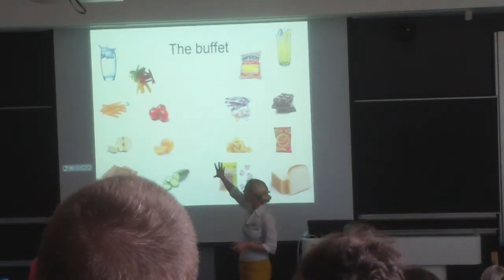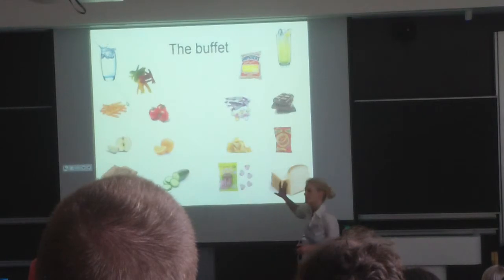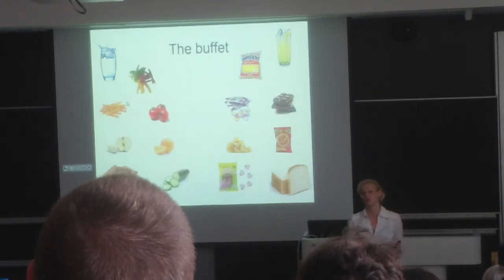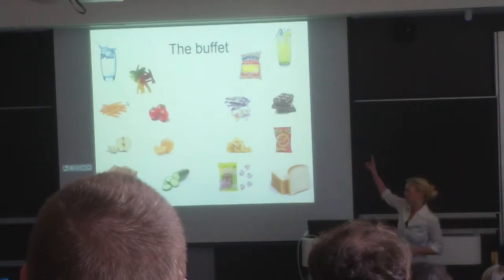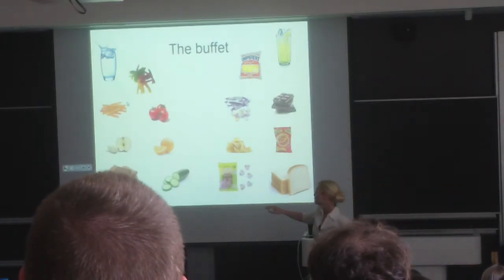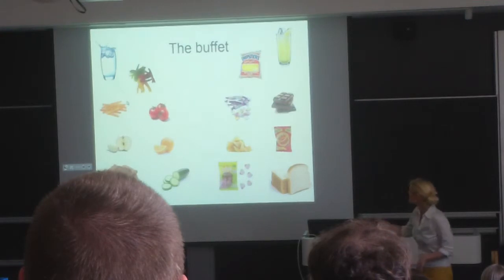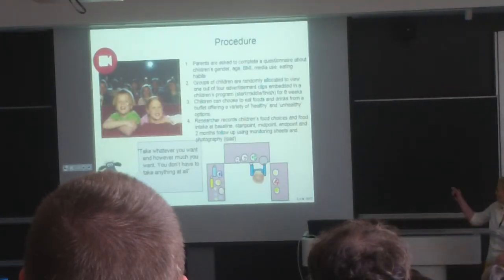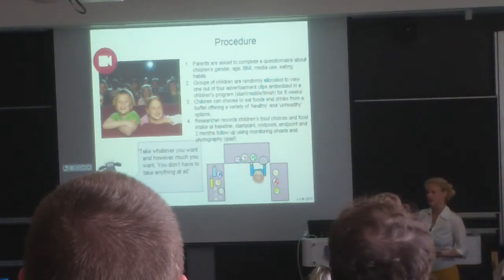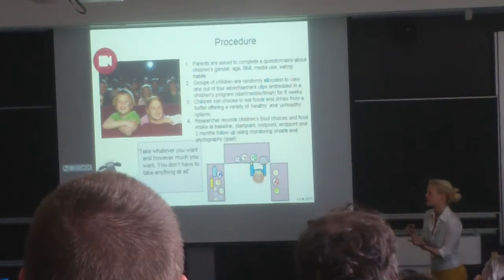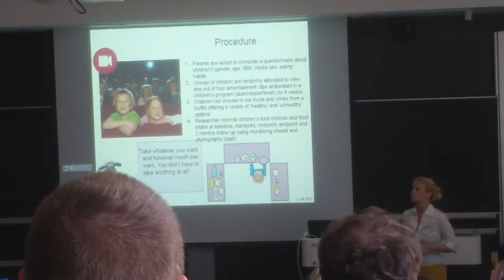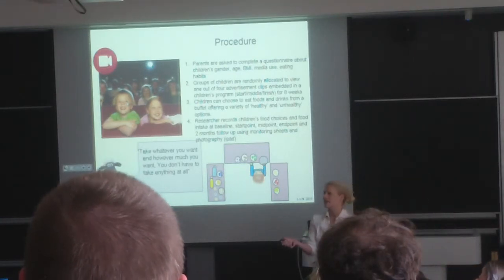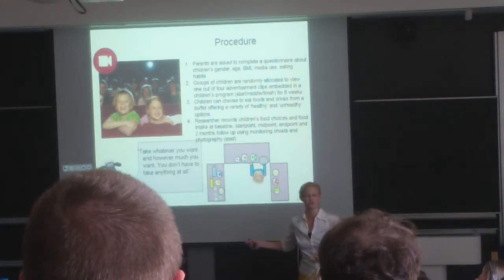On one side you have water, vegetables, fruits, and whole-grained bread. On the other side are foods we label as healthier versus less healthy — although I'm not entirely happy with that black-and-white distinction, I think we can all agree it's better for children to drink water than sugary drinks, and to eat vegetables rather than chocolate. I'm recording food choices and intake at baseline, after one intervention session, at midpoint and endpoint, and I hope to have a follow-up later on. I'll monitor this using paper sheets, and I also want to try having kids take images themselves on an iPad.